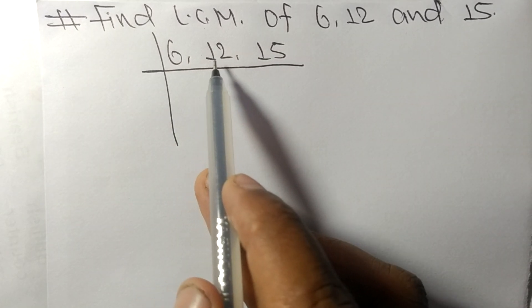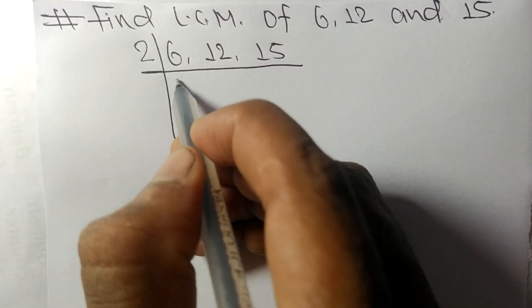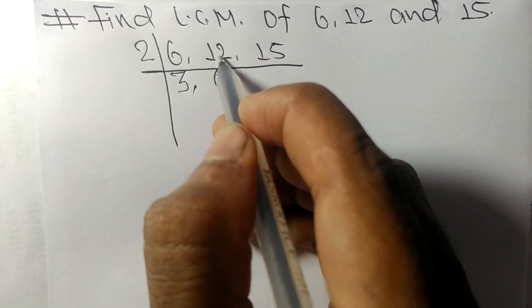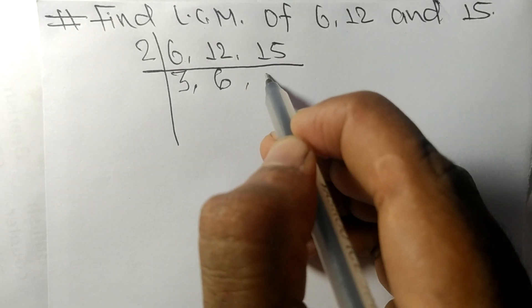2 times 3 means 6, 2 times 6 means 12. 15 is not divisible, so it stays the same.